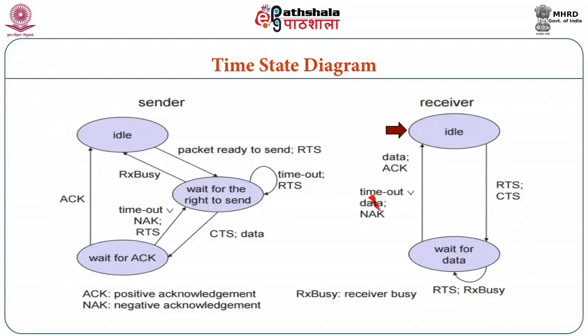Similarly, the receiver can be in two states: idle and wait for data. It moves to wait for data state when it receives an RTS and sends CTS. It returns to idle when data is received and acknowledgement is sent, or when a timeout for data occurs or a negative acknowledgement occurs. Through this time-state diagram, we understand the four-way handshake between sender and receiver in the MACAW algorithm.